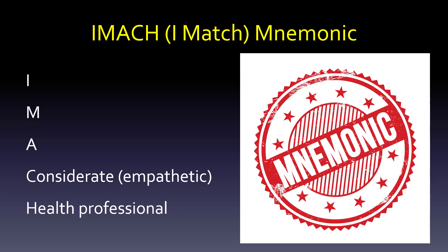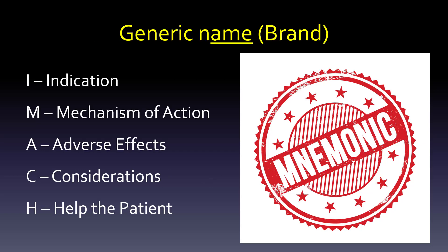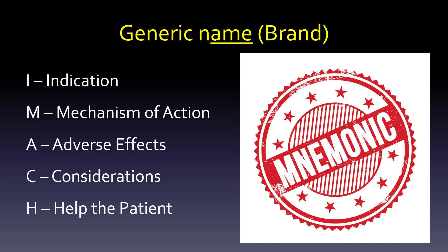And then health professional. So: I am a considerate health professional. The H is really just — as a health professional, what do I need to do to help the patient? And that depends on what you do. Are you a pharmacist, physician, nurse, physician assistant? What is your role in helping the patient? So: indication, mechanism of action, adverse effects, considerations/contraindications, and how can we help the patient better take the medicine? I'll show you how this works with the beta agonists.